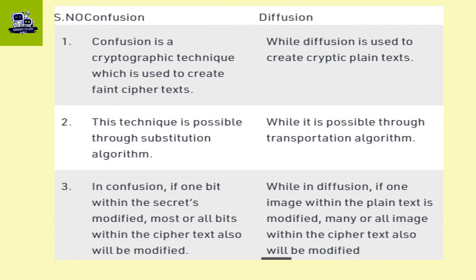Confusion is a cryptographic technique which is used to create ciphertext from plaintext. We use confusion as a technique to create ciphertext.